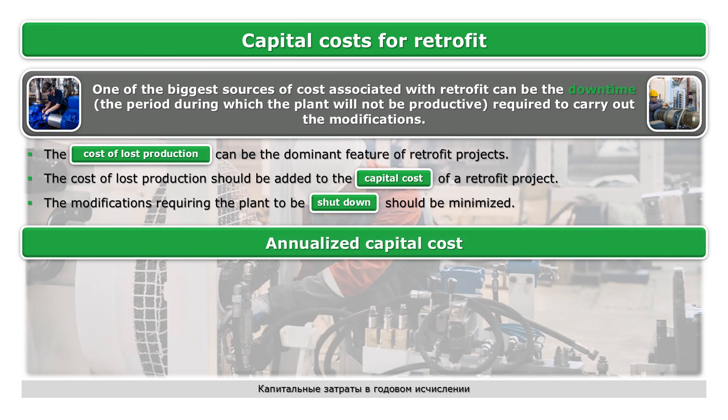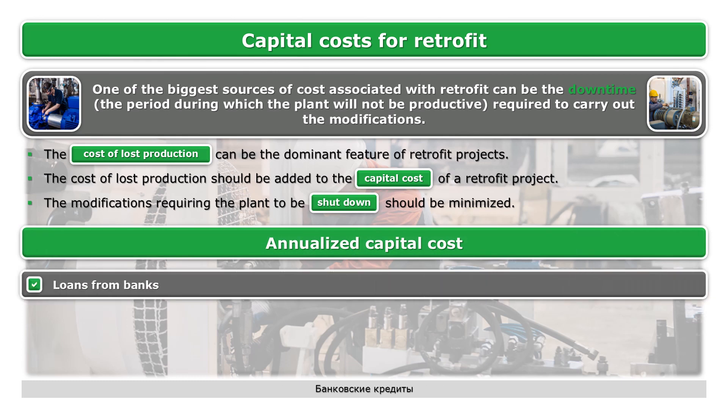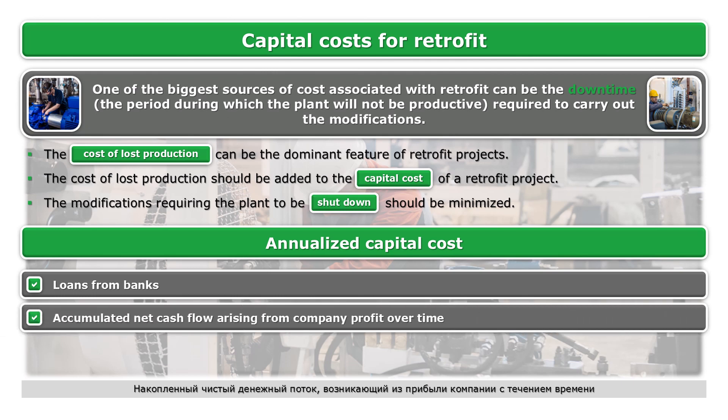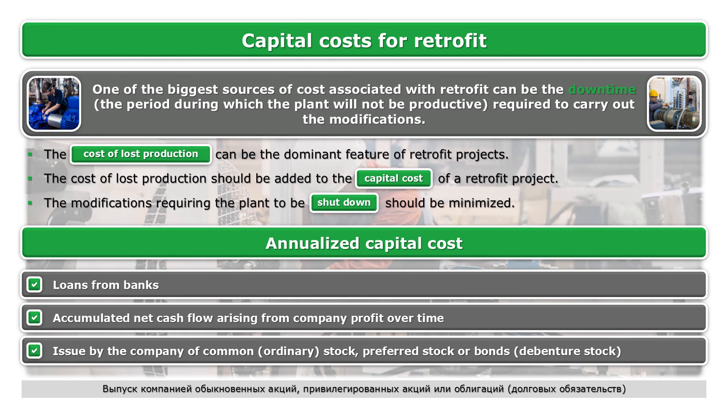Annualized capital costs can be funded through loans from banks, accumulated net cash flow arising from company profit over time, or issued by the company as common (ordinary) stock, preferred stock, or bonds (debenture stock).